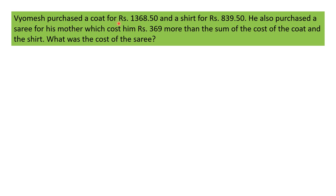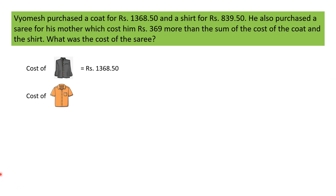Vyamesh purchased a coat for Rs. 1,368.50 and a shirt for Rs. 839.50. He also purchased a saree for his mother, which cost Rs. 369 more than the sum of the cost of the coat and the shirt. What was the cost of the saree? So, cost of the coat is Rs. 1,368.50, and cost of the shirt is equal to Rs. 839.50.